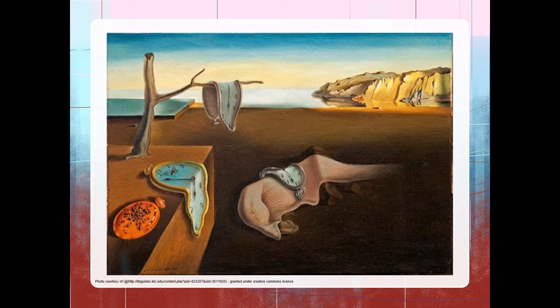Dali was known for using sunlight as his light source, so you can see the cliffs on the right-hand side are lit up, whereas the figure — which is strange and I don't really know what it is — seems to be in the shade. Also, what are the strange steps?